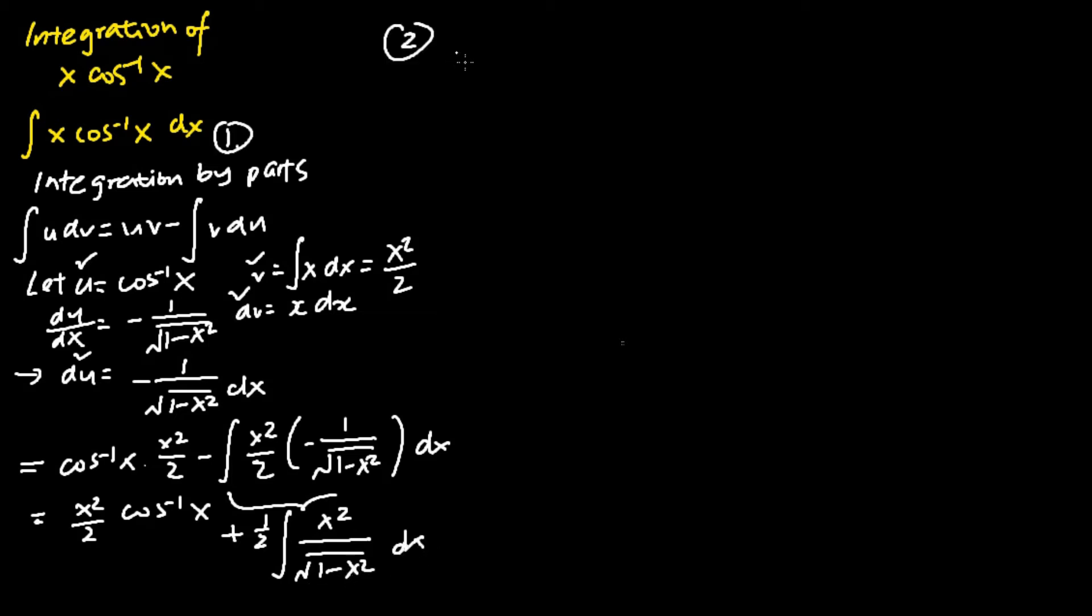The second step we are going to do is apply the integration by substitution technique. To evaluate the integral of x square over square root of 1 minus x square dx, we will let x equals sine u.